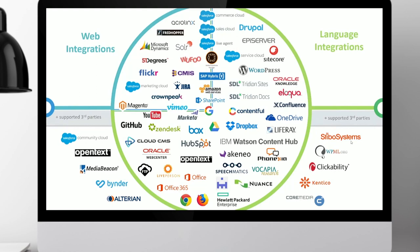To call out a couple of examples of connectors we've been working on this year: we now have integrations available with Sitecore and Viva, and we'll look at the Viva integration shortly. For existing connectors we've continued to develop, we've recently made updates to our Marketo connector, and similarly for GitHub, Zendesk, HubSpot, and NetiServer. We'll also shortly be releasing an in-context review feature that supplements our integration with Adobe Experience Manager.